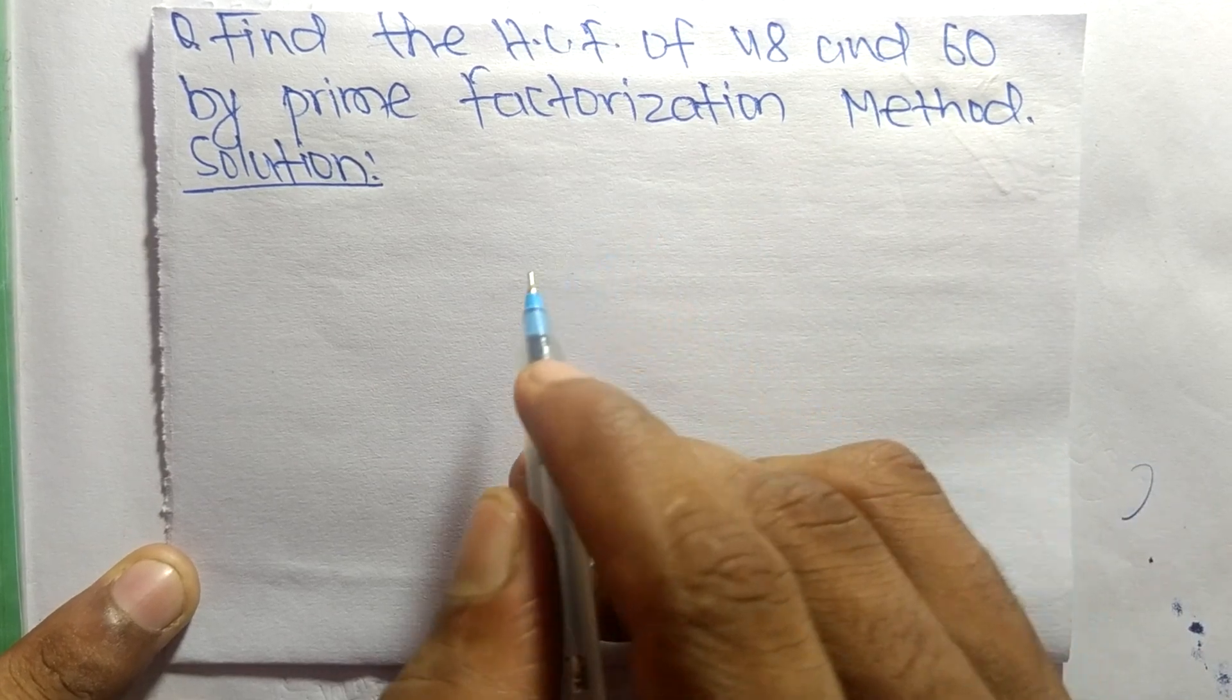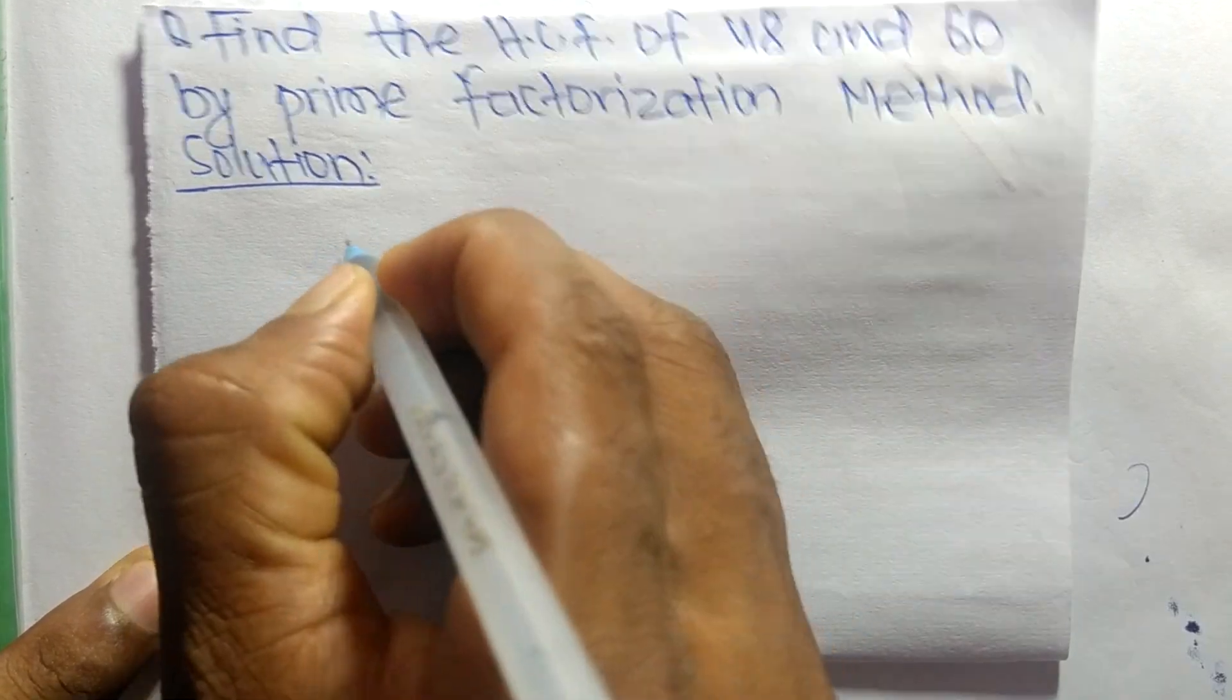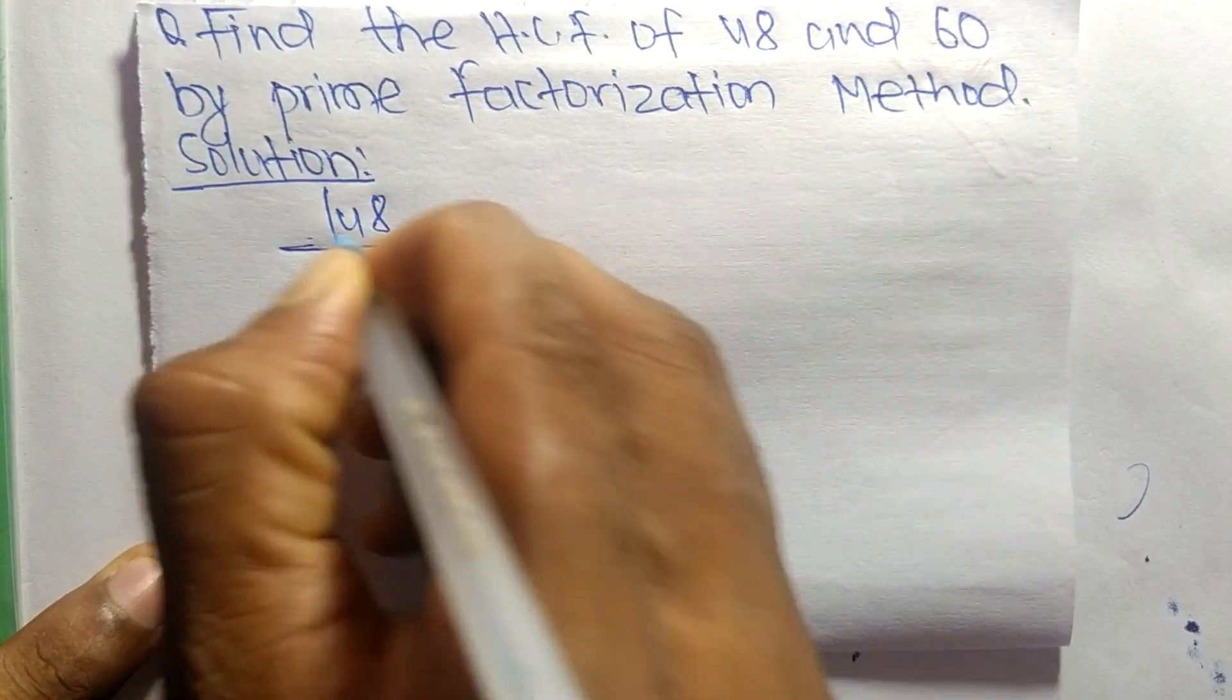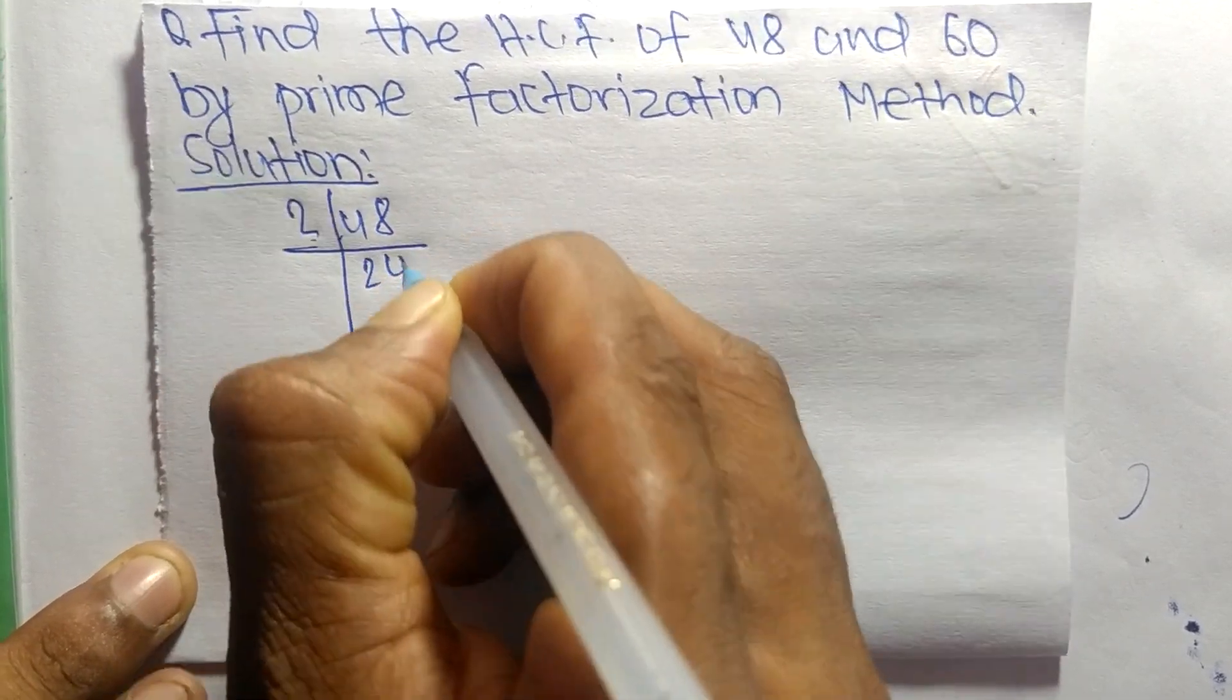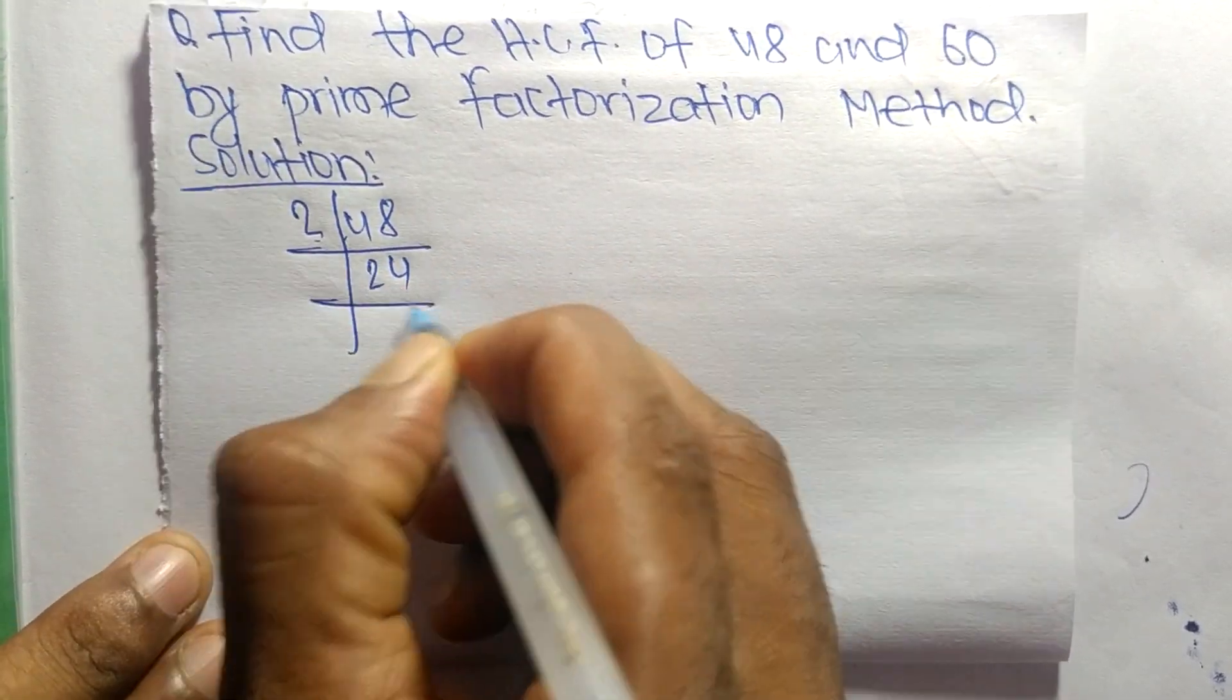First, we find out the prime factors of 48. It is 2 times 24 equals 48.